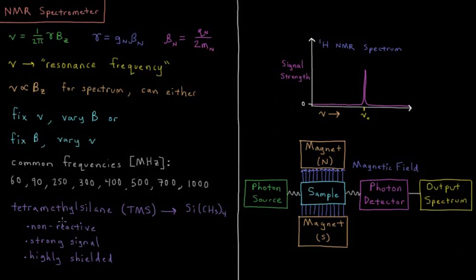Because it's non-reactive, so it's not going to disappear in the sample. It has a strong signal because you have 12 protons in the molecule. All of them are chemically equivalent. And it's what we'll see in future videos is called highly shielded in that there's a lot of electron density around it, so it's not subject to a lot of external environmental factors. It's going to give a pretty consistent signal for what resonance frequency it'll have.